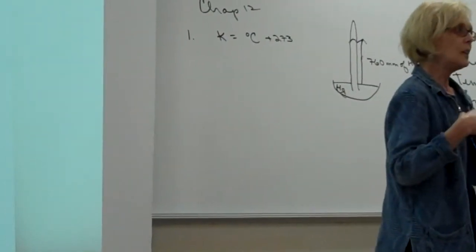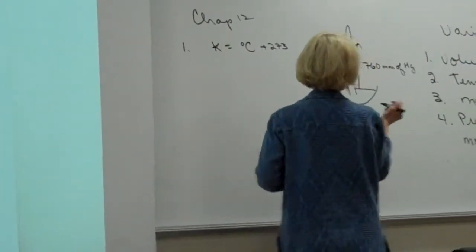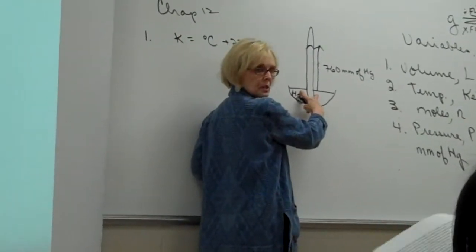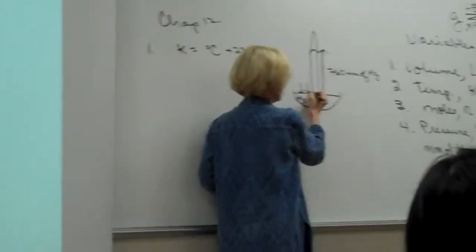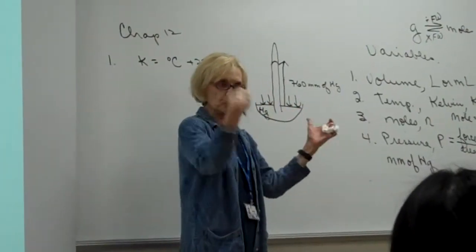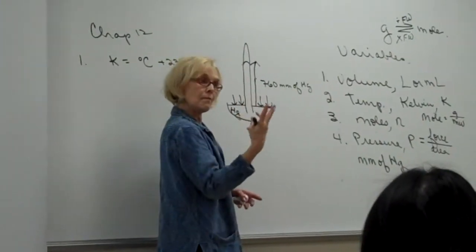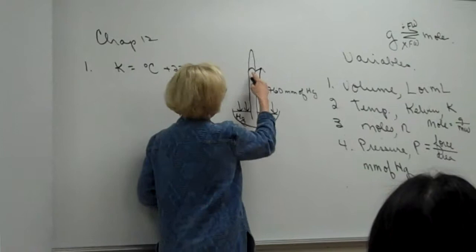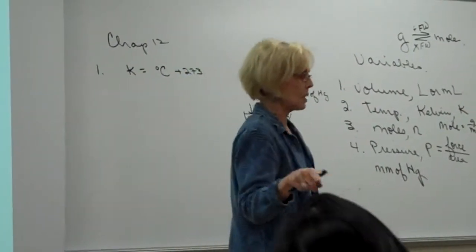How did he explain what was going on? The surface of the mercury is experiencing the molecules in the air bombarding it — force per unit area — with enough force to support a column of mercury 760 millimeters high.